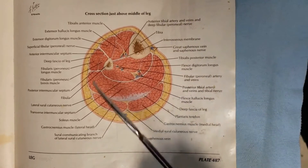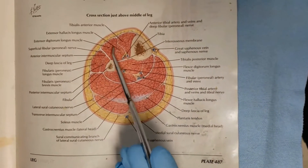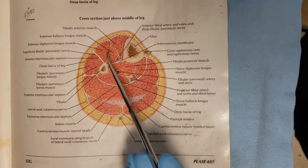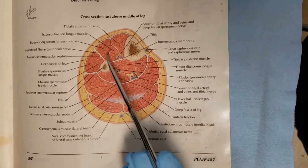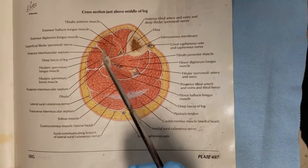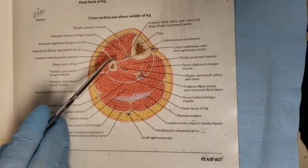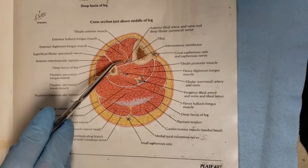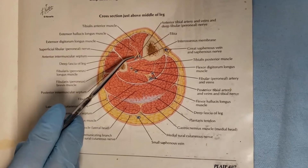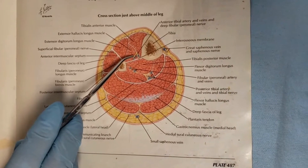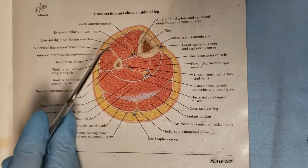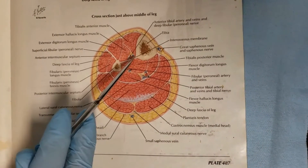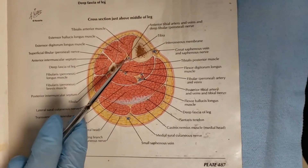The anterior compartment contains four muscles — though we only see three here, because the fourth one arises distal to where this cross section was made. The muscles in this compartment are innervated by the deep fibular nerve, also previously known as the deep peroneal nerve. The vasculature is supplied by the anterior tibial artery and the pair of anterior tibial veins.